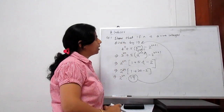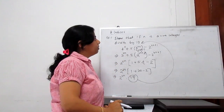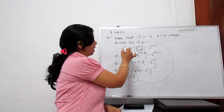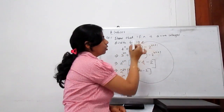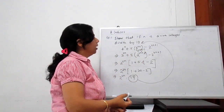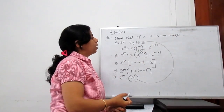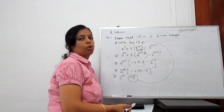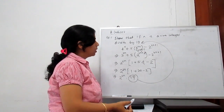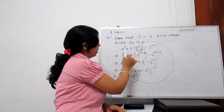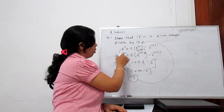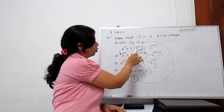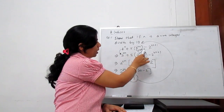Next problem: show that if n is a positive integer divisible by 19, then 4 to the power n plus 5 times 4 to the power n plus 1, minus 2 to the power 2n plus 1 is divisible by 19. Convert 4 to the power n into base 2: 2 to the power 2n, then 5 times 2 to the power 2n plus 1.